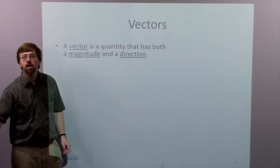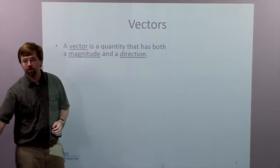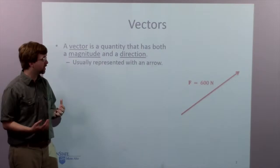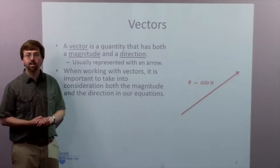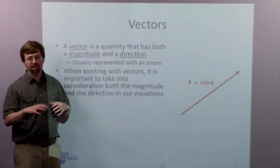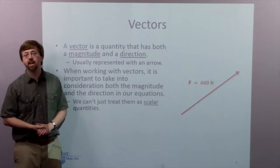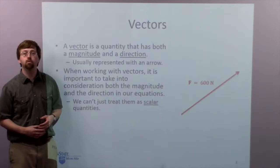Today we're going to be talking about vectors. A vector is a quantity that has both a magnitude and a direction. These are usually represented with an arrow in diagrams, like this over here would be a 600 Newton force, and the direction is shown by the arrow itself. When we're working with vectors, it's important to take into consideration both the magnitude and the direction within our equations. We can't just add things up and treat them like scalar quantities, which is a quantity that has a magnitude but no direction.